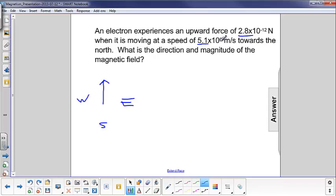Now we have the velocity moving towards the north of this electron, and the upward force, so upward in this case is out of the board. So that's a little different from what we've done before. So here's our geometry of what's going on here.